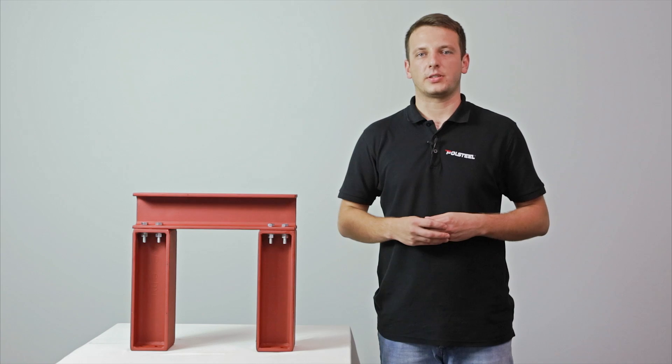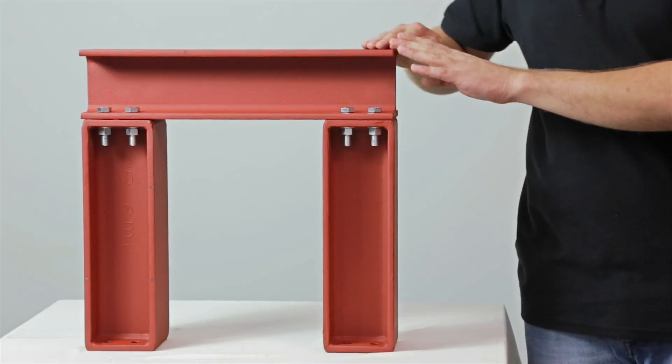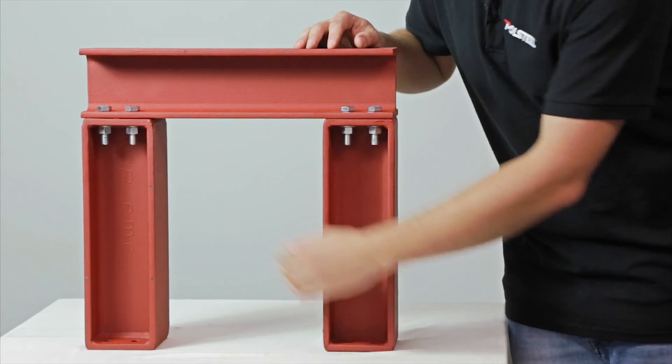The second steel structure is a goalpost, consisting of one horizontal beam with two vertical columns.